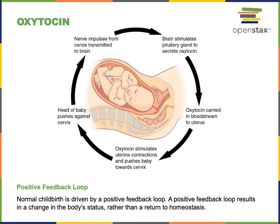This stretching stimulates more stretch receptors that relay the signal into the brain, leading to even more secretion of oxytocin, which activates the smooth muscle to contract in a positive feedback loop until the child is born.